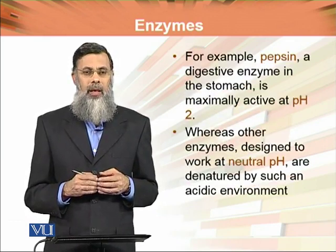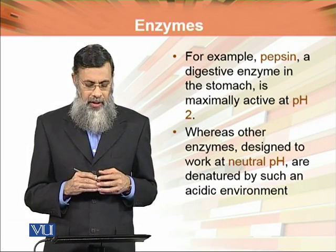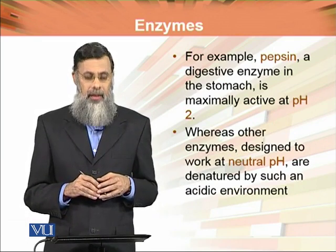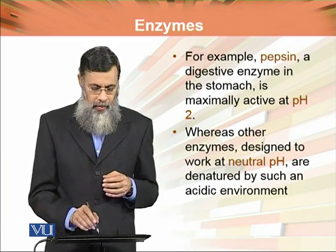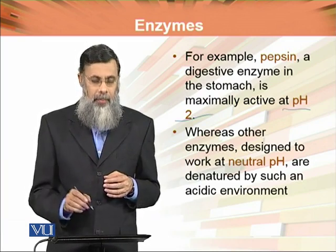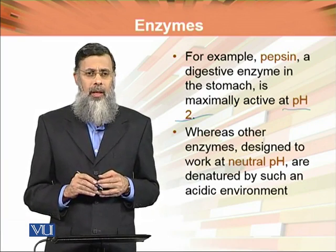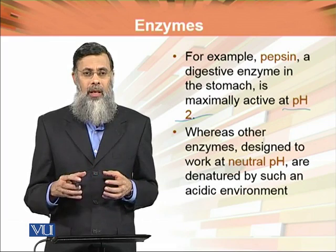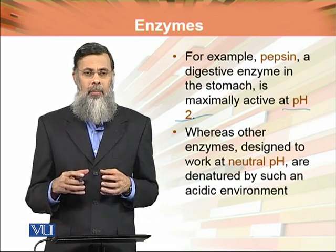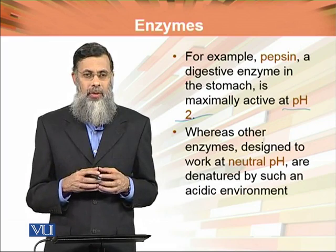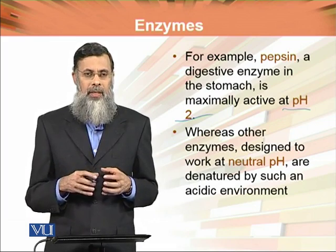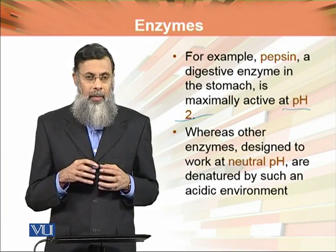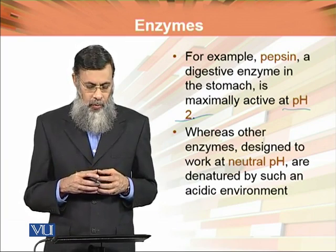For example, pepsin, which is a digestive enzyme in the stomach, is maximally active around pH 2. Ab stomach ki pH kya hai, woh 2 hai. Toh is extreme pH par agar ham koi aisa enzyme daal lete hain jis ki optimum pH 7 hai, woh denature ho jayega. So, pepsin is a particular enzyme which has maximum activity at pH 2.